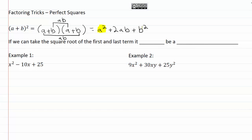So one thing that we might notice about this right here is that we have something squared at the beginning and something squared at the end. So our trick right here, our factoring trick, is that if we can take the square root of the first term and the last term, it may be a perfect square trinomial.